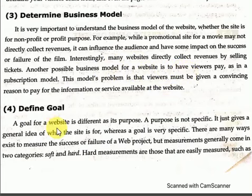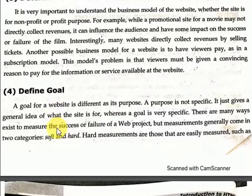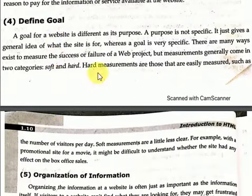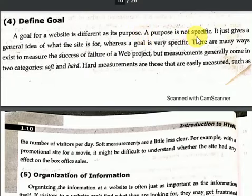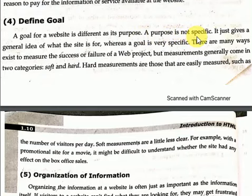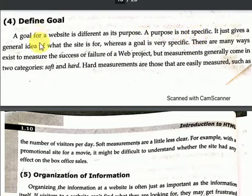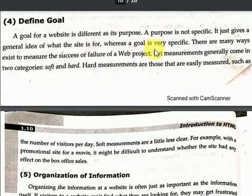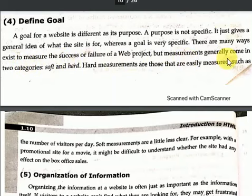Next is to Define the Goal. The goal for the website is different from its purpose. Purpose is not specific — it gives a general idea of what the site is for — whereas the goal is very specific. There are many ways to measure the success or failure of a web project, but measurements generally come in two categories: soft and hard.